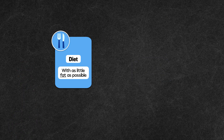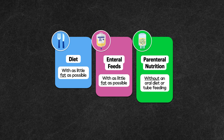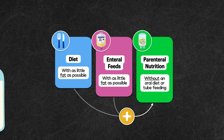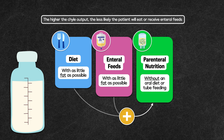Options for nutrition therapy include: a diet with as little fat as possible, enteral feeds with as little fat as possible, parenteral nutrition with no diet or enteral feeds, and some combination of a low-fat diet or enteral feeds and parenteral nutrition. The decision on which to provide is typically made based on the measured volume of chyle that is leaking per day. The higher the chyle output, the less likely the patient will eat or receive enteral feeds, and the more likely they'll be given parenteral nutrition. A common threshold used is 1000 milliliters per day, and enteral feeds are only given if the patient is unable to eat by mouth.